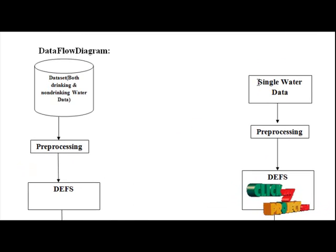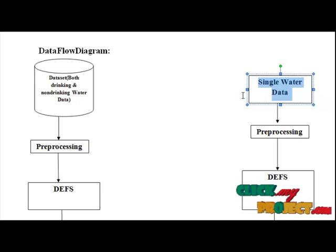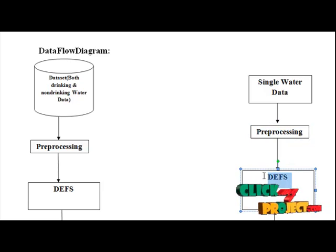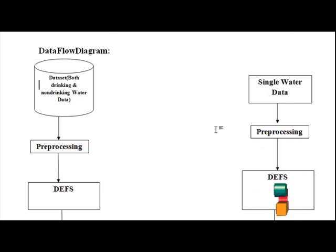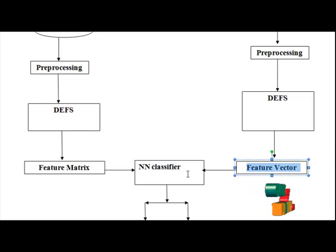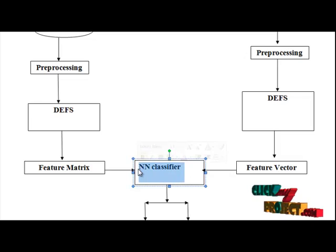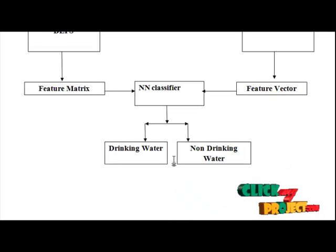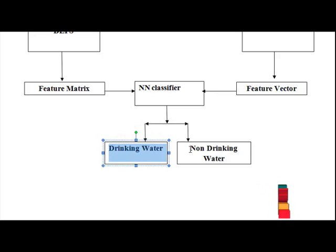This is our single water data path. Here we choose any one drinking water or non-drinking water parameter sample. It goes through the same preprocessing step — matrix format arrangement — then through DFS for best parameter selection. The selected parameters are arranged into a feature vector, passed through the neural network classifier, which returns whether the water is drinking or non-drinking.